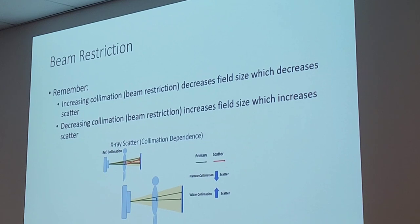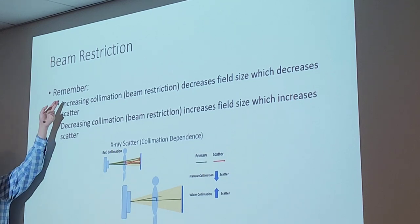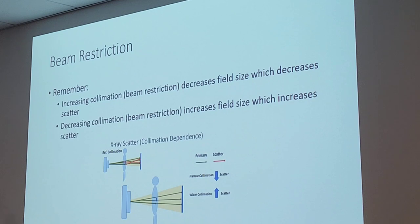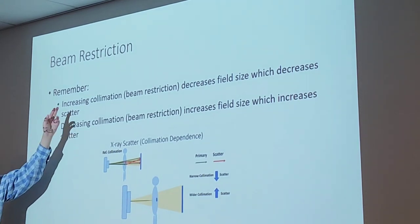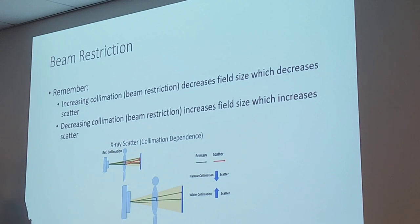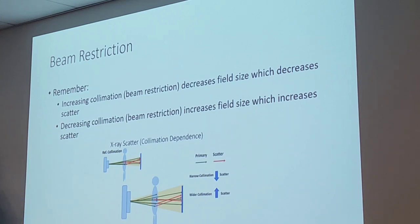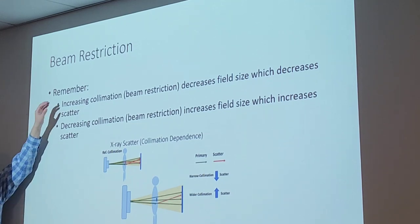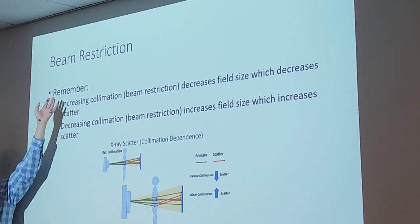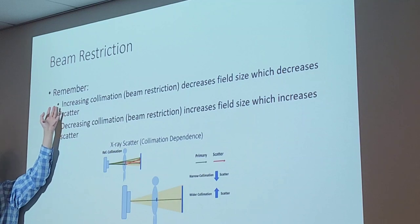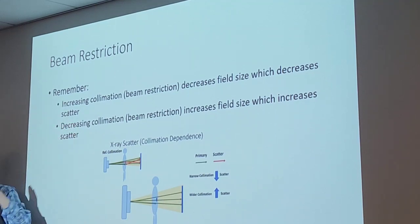Also remember: when we talk about collimation, the language is a bit backwards. Increasing collimation means increasing restriction, so the beam is actually getting smaller. Decreasing collimation means less restriction, so the light field gets bigger. Increasing collimation makes the light small; decreasing collimation makes the light big.